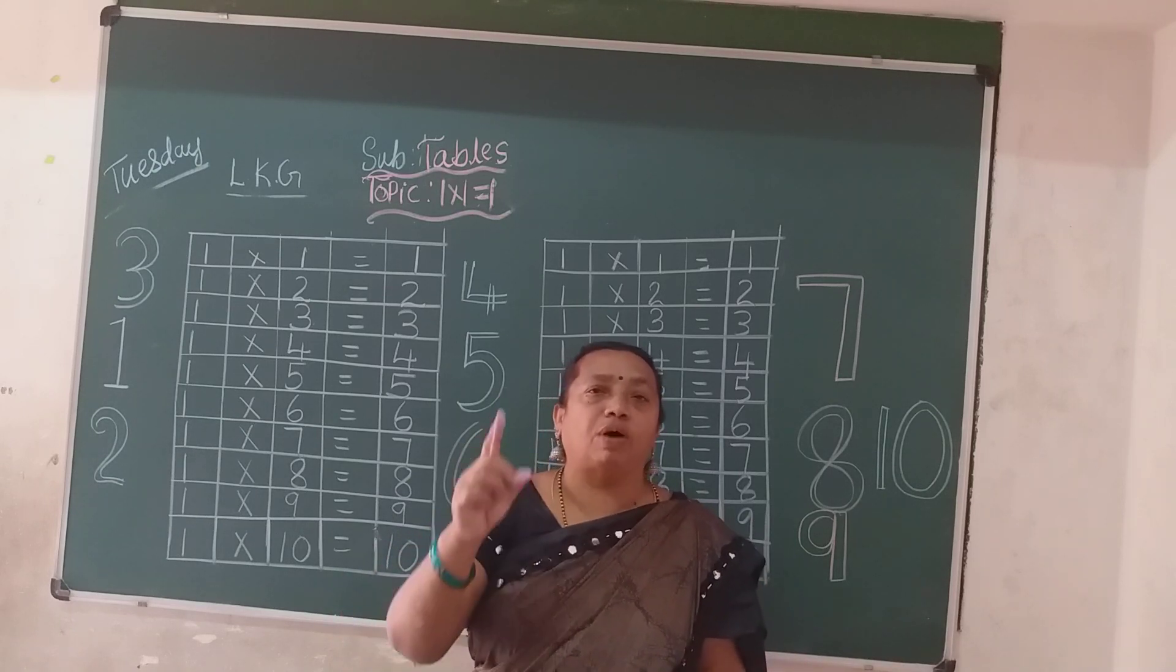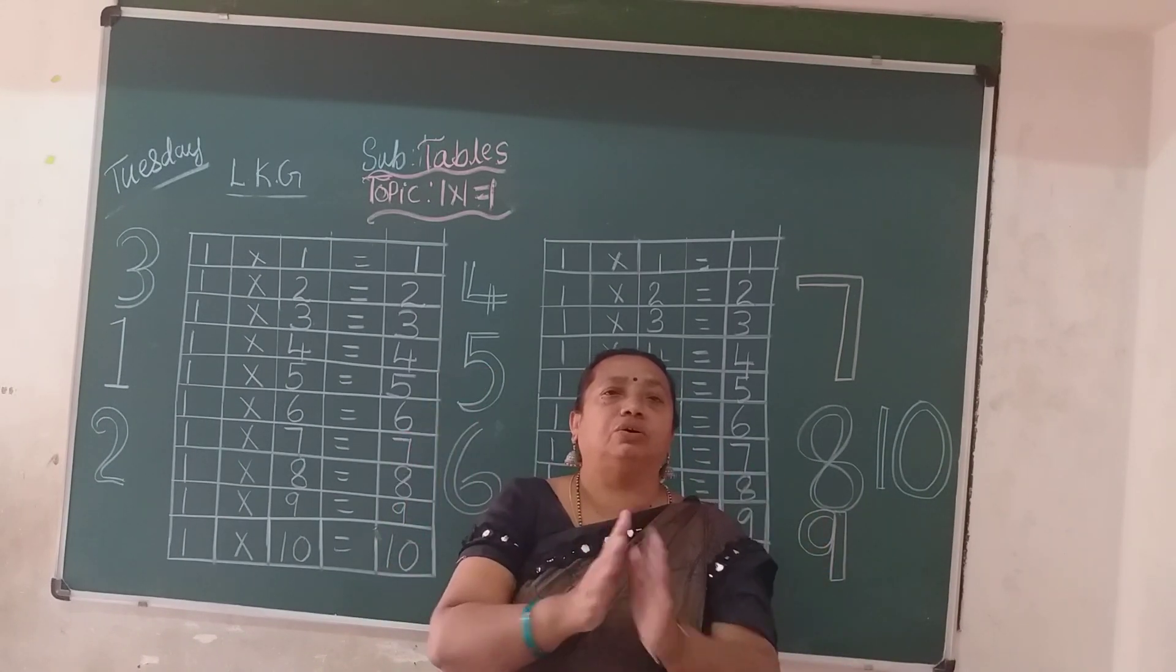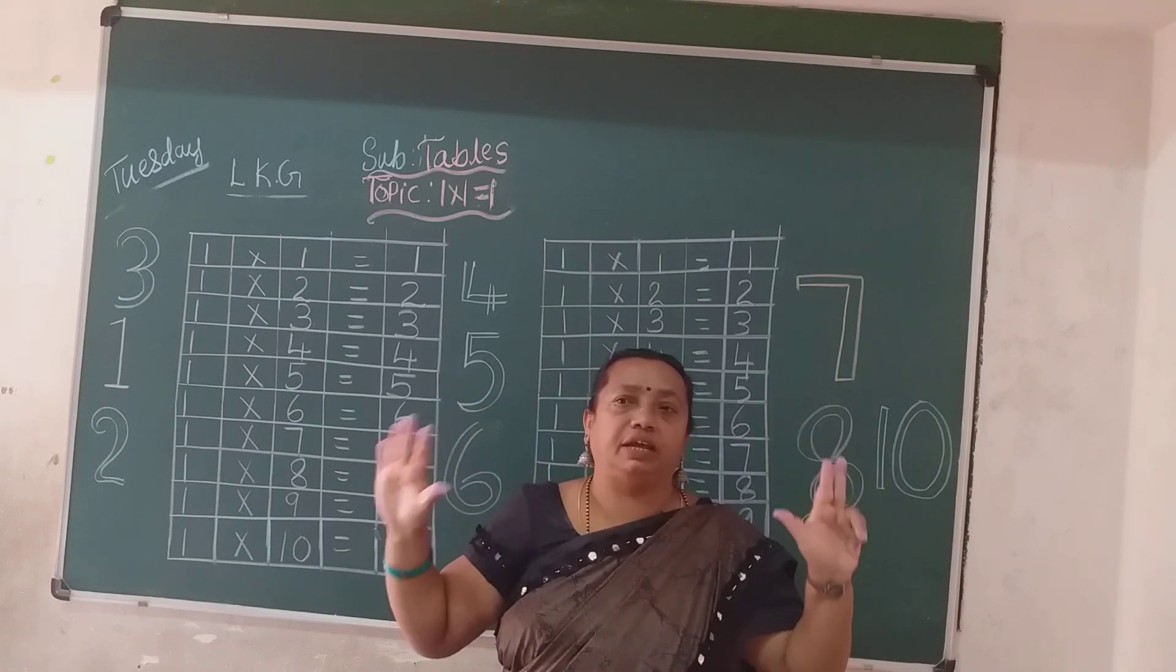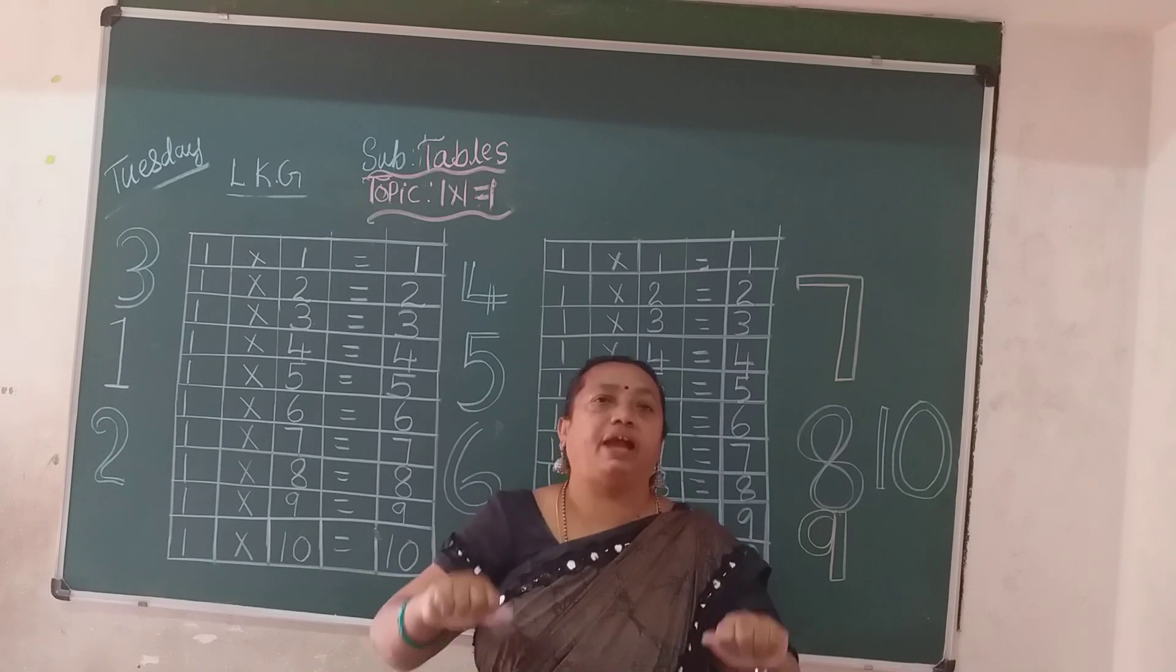One more time, children. One-two, buckle my shoe. Three-four, shut the door. Five-six, pick up sticks. Seven-eight, lay them straight. Nine-ten, a big fat hen.